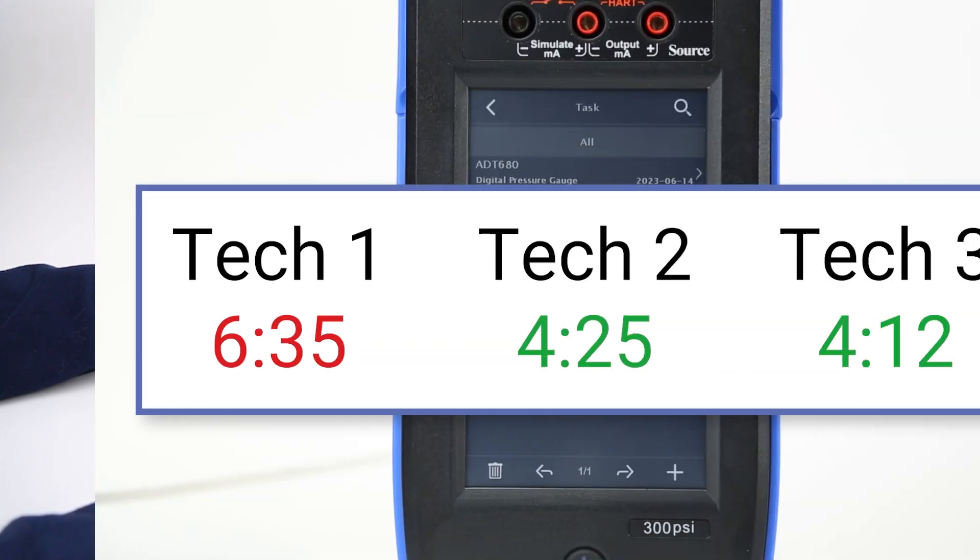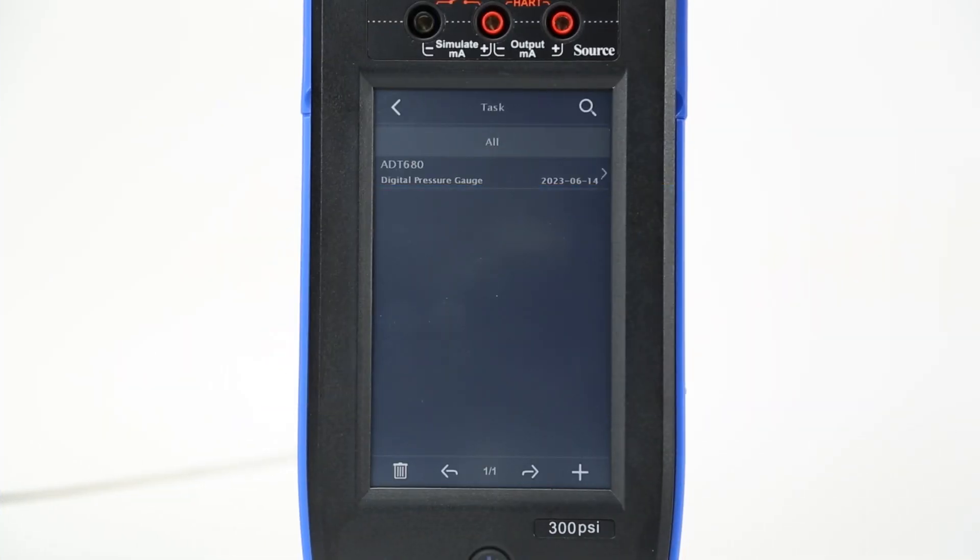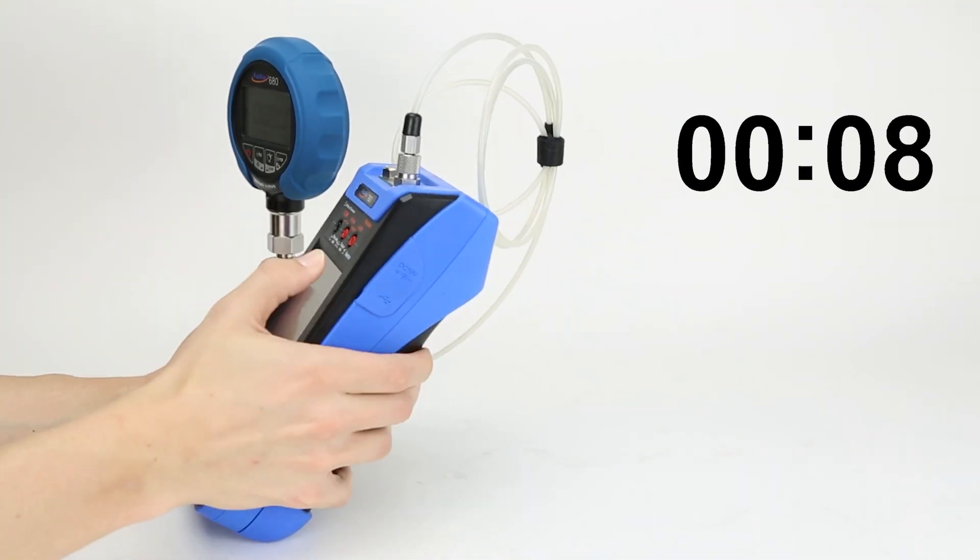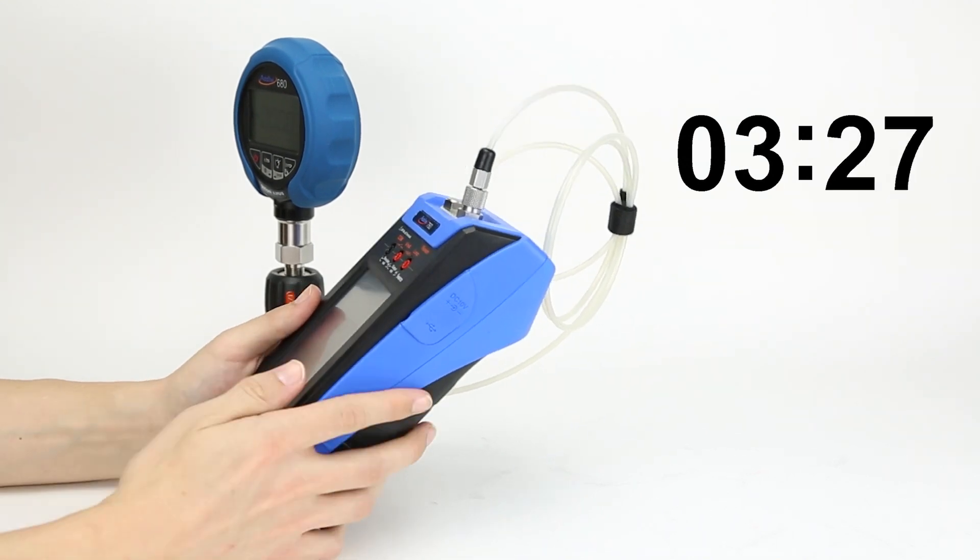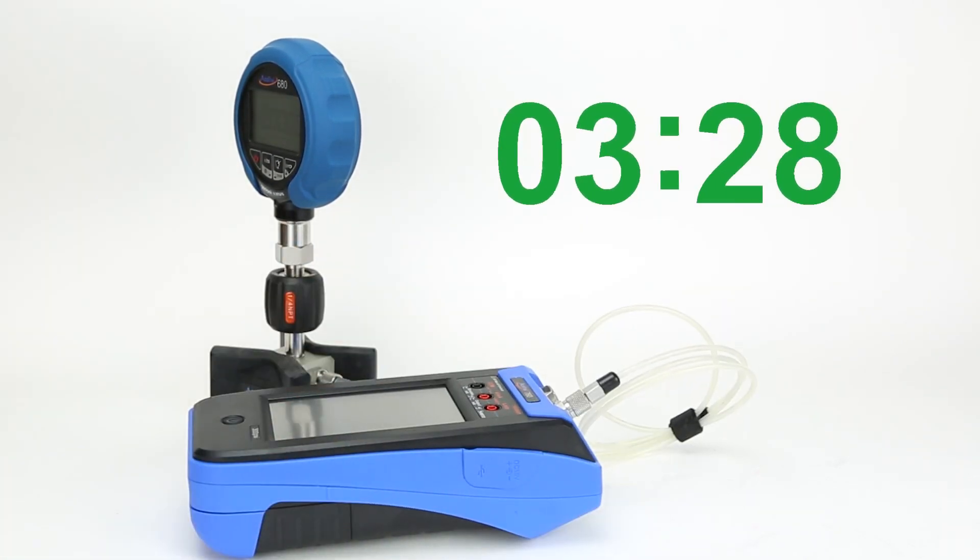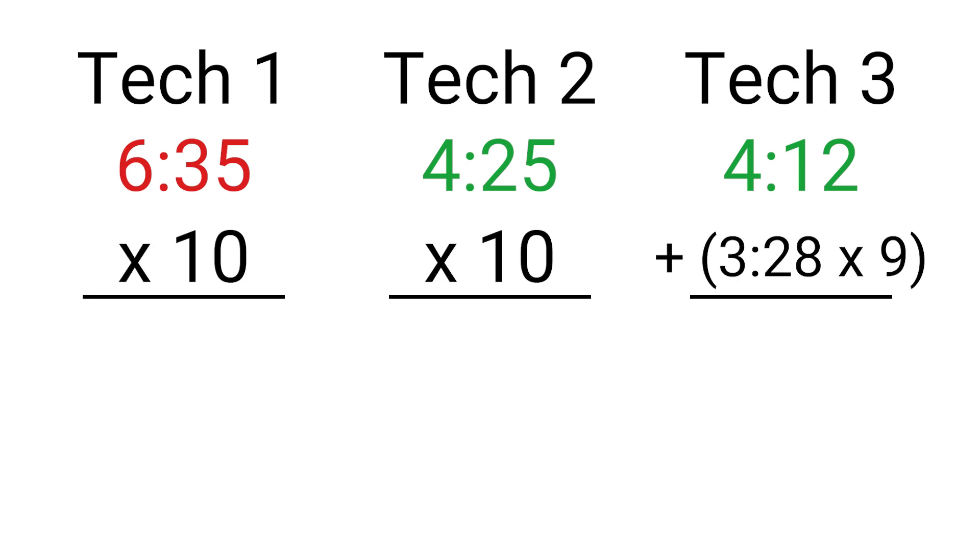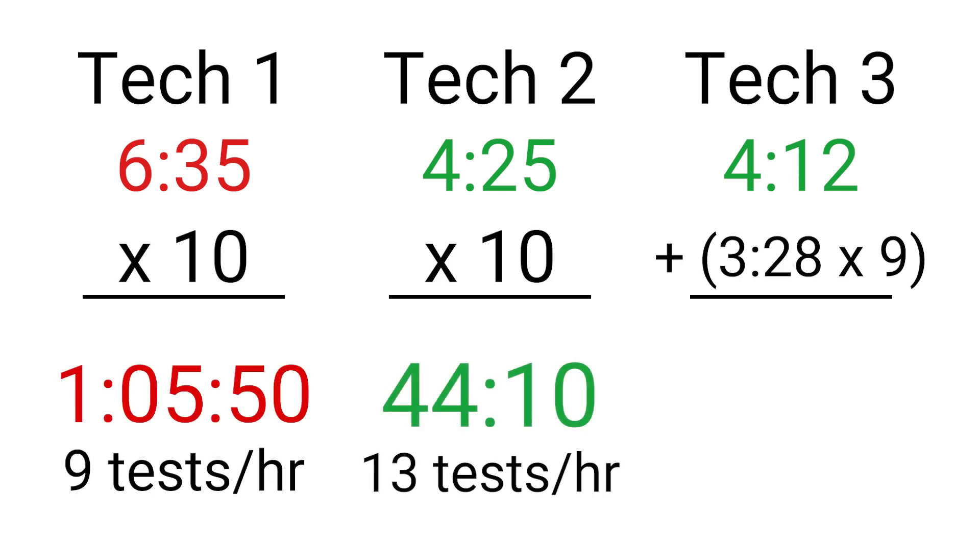But the increased efficiency doesn't stop there. Since Technician 3 now has this device saved in a task program, they can skip the data entry portion on their next calibration and start right away, saving another 30 seconds of their valuable time. This way, if each technician does 10 tests, the manual calibration times stay constant, while the automatic calibrations become more efficient after the first.